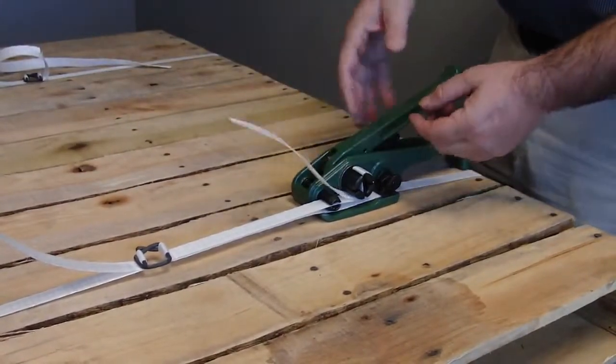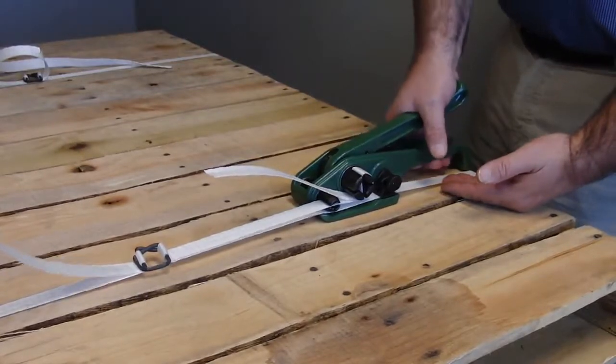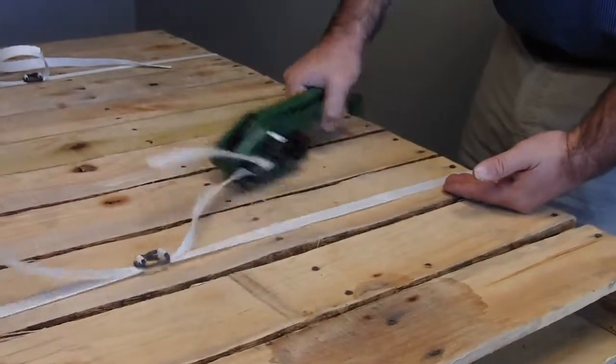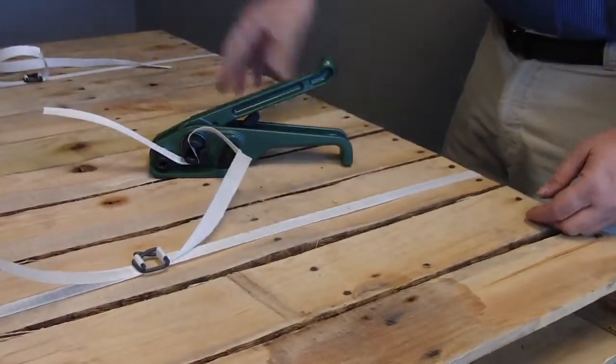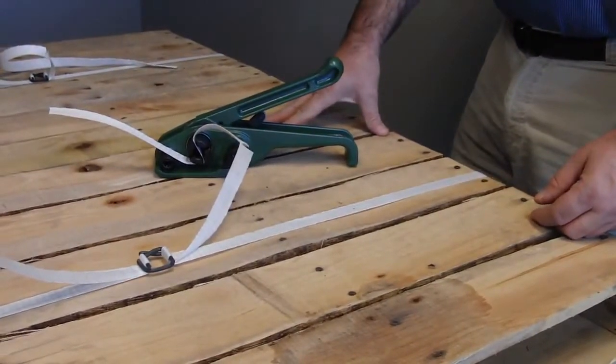To remove the tool, you take the handle, you squeeze it, and pull it away from you, and you have the cord banding applied to your product.